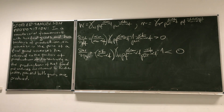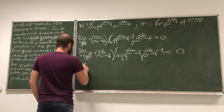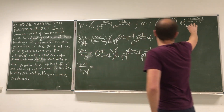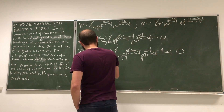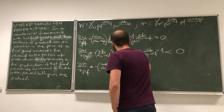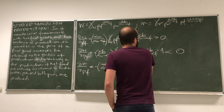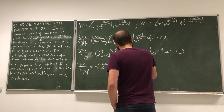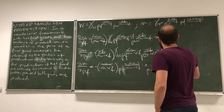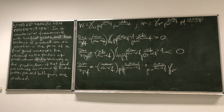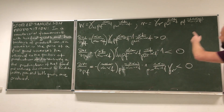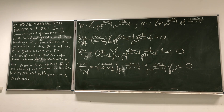Now we can move on to rent. What will happen to rent if the price of food goes up? We put this expression in front and rearrange the order a little bit. All those components are positive, but we have a minus. So we see that when the price of food increases, rent is going down.